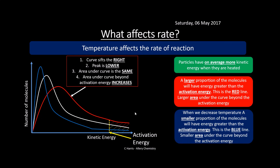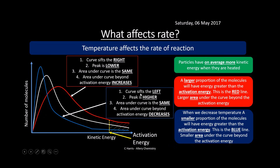If we decrease the temperature, a smaller proportion of molecules will have energy greater than the activation energy. The blue curve shows this — the area under the activation energy threshold is really low, so we don't have as many particles with sufficient energy to react. The key features: the curve shifts to the left and is squashed up; the peak is higher than the original; the area under the curve is the same; and the activation energy area is smaller for lower temperatures.